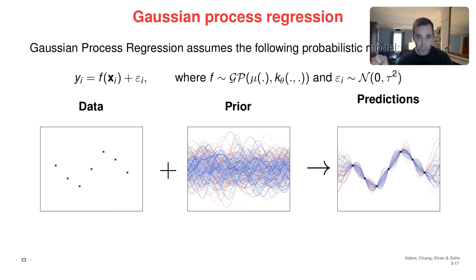I'm going to now review quickly Gaussian process regression. Gaussian process regression is a regression algorithm where you go from input Xi to data Yi, under the assumption that Y relates to X through a nonlinear function F that is unknown, plus corrected by some noise. And in Gaussian process regression, you make the assumption that F is a priori distributed like a Gaussian process, parameterized by a mean function and a covariance function.